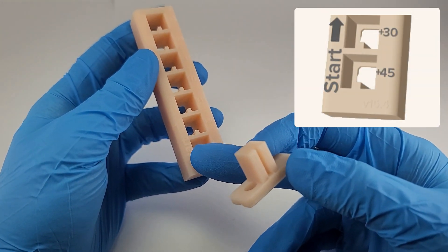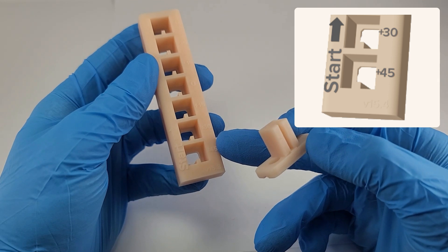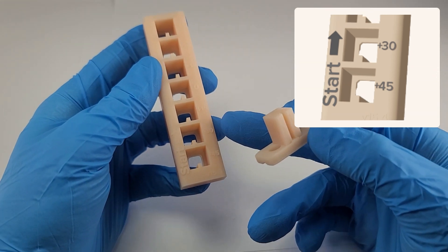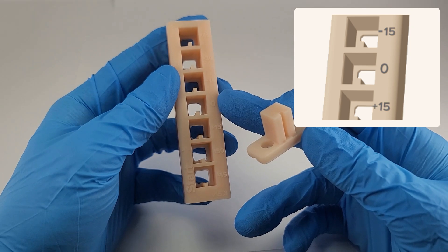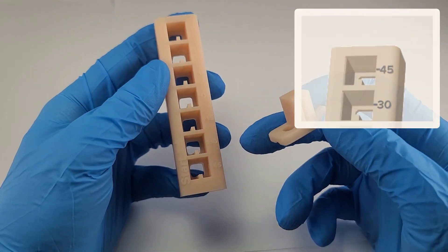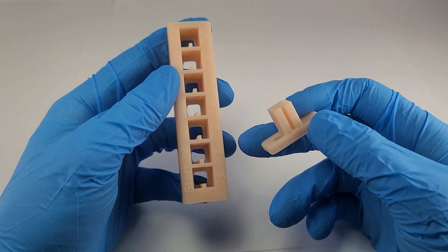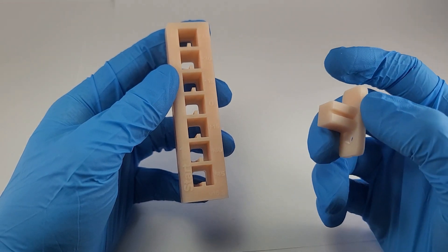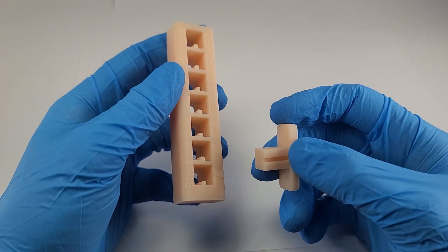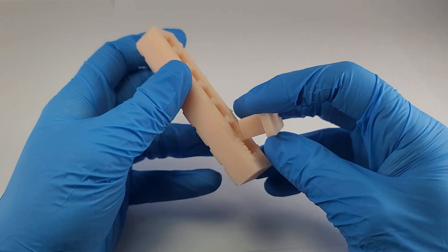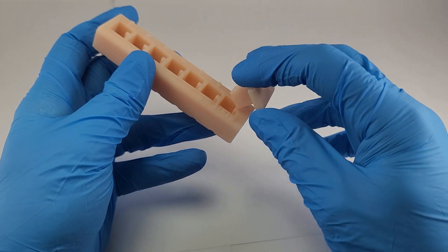If you notice here, there's a starting position, and the number on the right here says plus 45, then it goes up to plus 30, 15, 0, and then it starts to go negative, so negative 15, 30, and 45. As you move up the chain or the ladder, it gets tighter. Our goal here is to get it into the position where it snugly fits and is not easily removed, and I'll show you what that looks like.